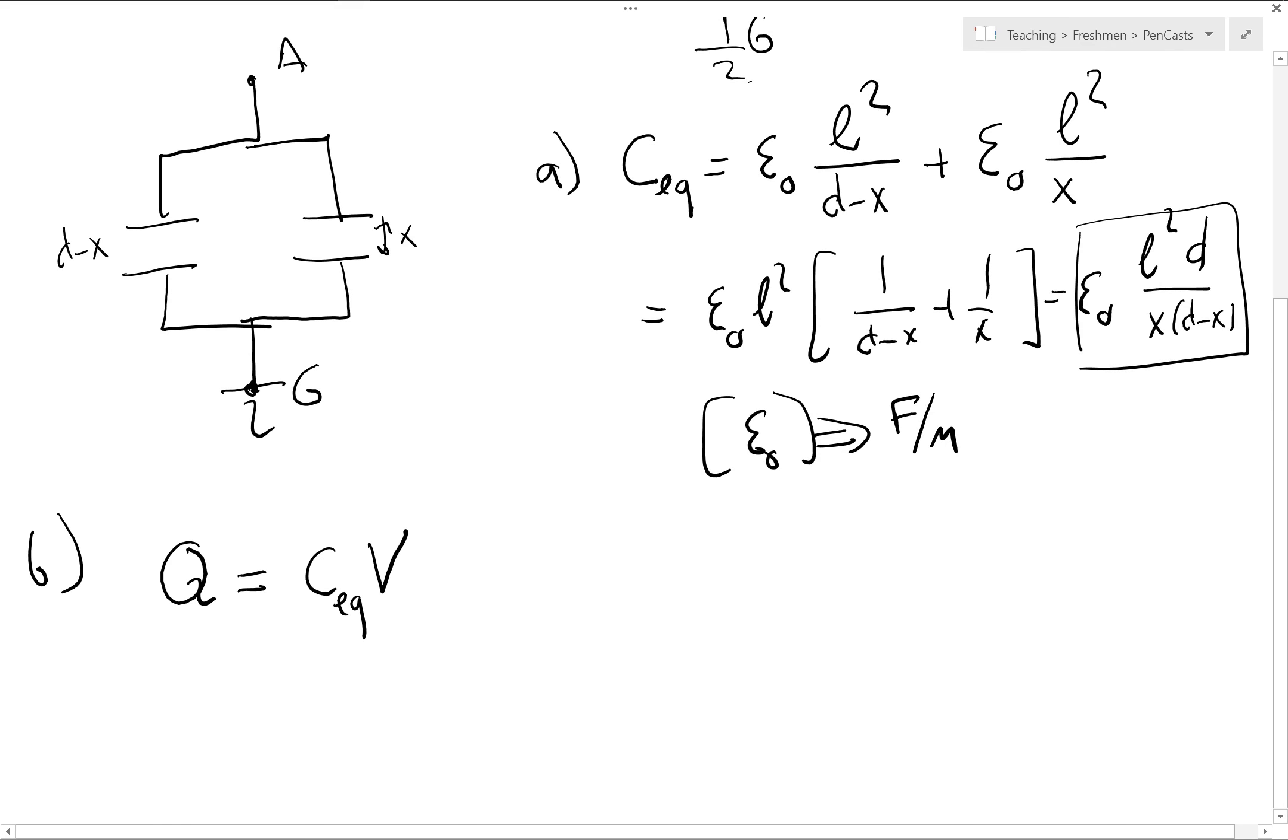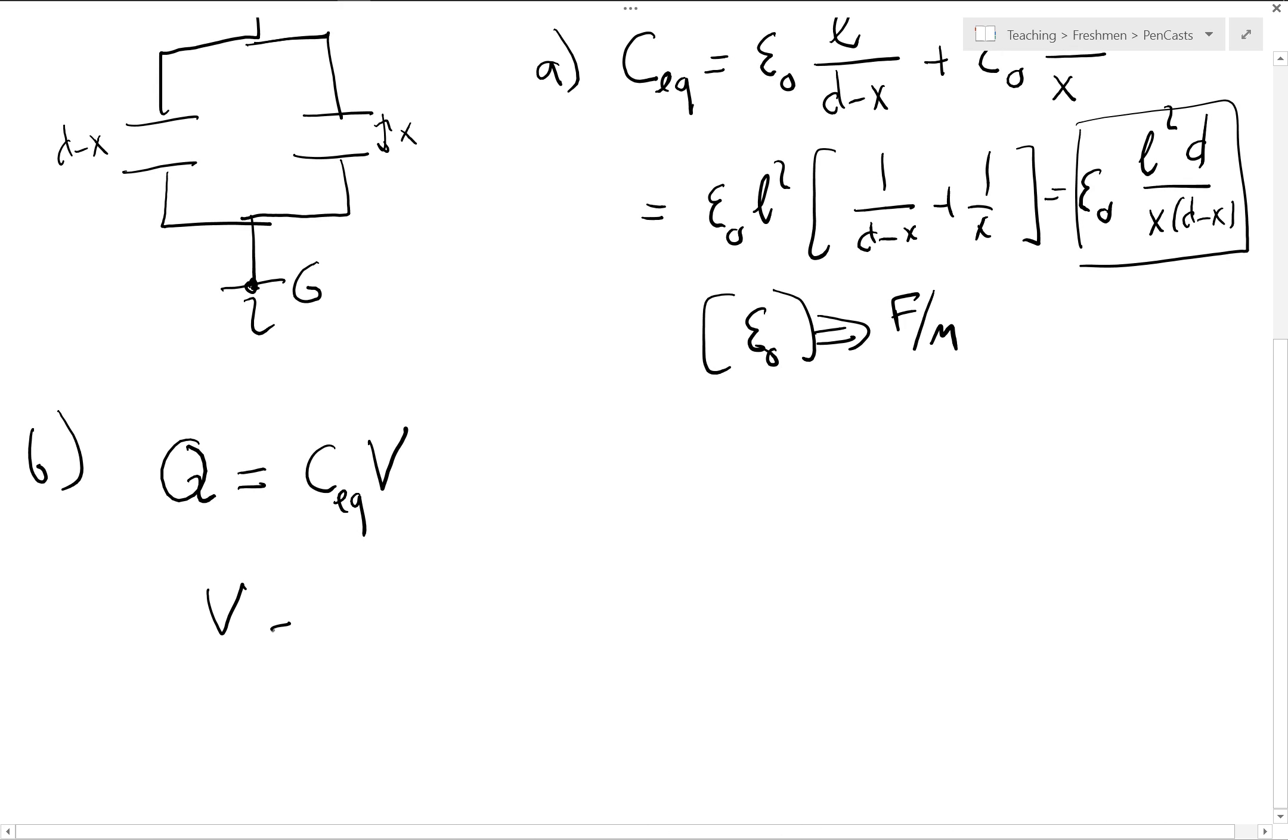And I know my equilibrium capacitance. So V will be Q over C. And then, Q over epsilon 0, L squared, D, X, D minus X. That will be my potential difference.